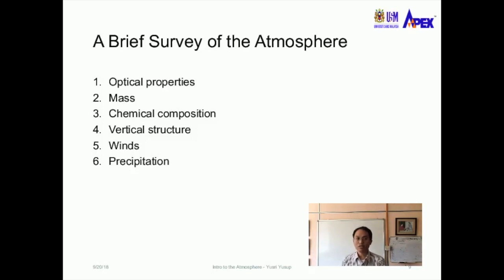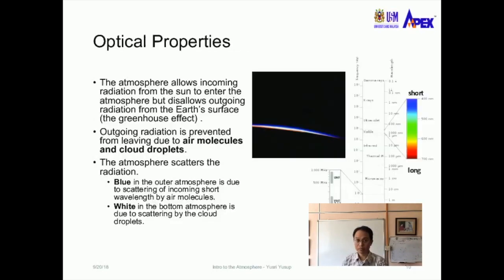There are six main topics. The first is optical properties, or how we see the atmosphere. The second is the mass of the atmosphere. The third is the chemical composition of the atmosphere. The fourth is the vertical structure, which includes temperature and pressure of the atmosphere. The fifth is the winds or the circulation of the atmosphere. And the last topic is precipitation.